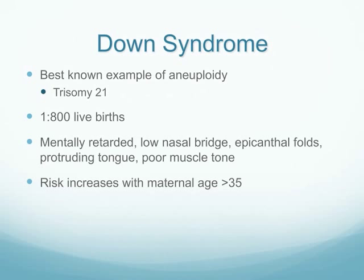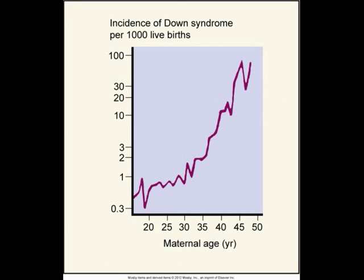One of the best-known types of aneuploidy is Down syndrome, which is trisomy 21. Characteristics include mental retardation, a low nasal bridge, epicanthal folds, a protruding tongue, and poor muscle tone. The major risk factor is maternal age greater than 35. This diagram shows the increase in Down syndrome births with advanced maternal age — as the mother gets older, there are more and more chances of a Down syndrome birth.